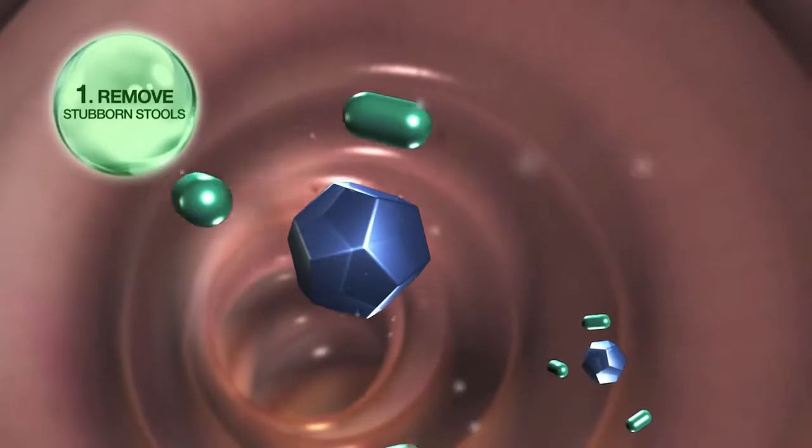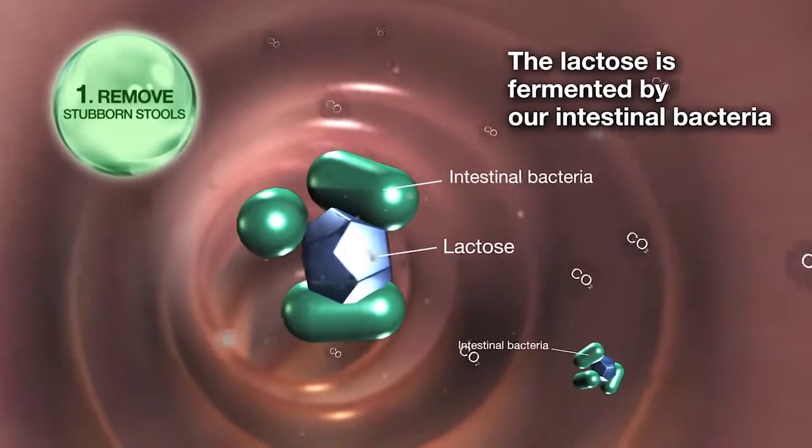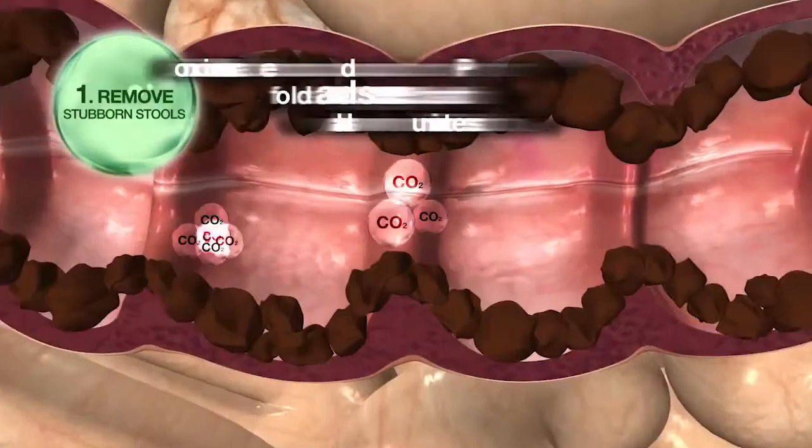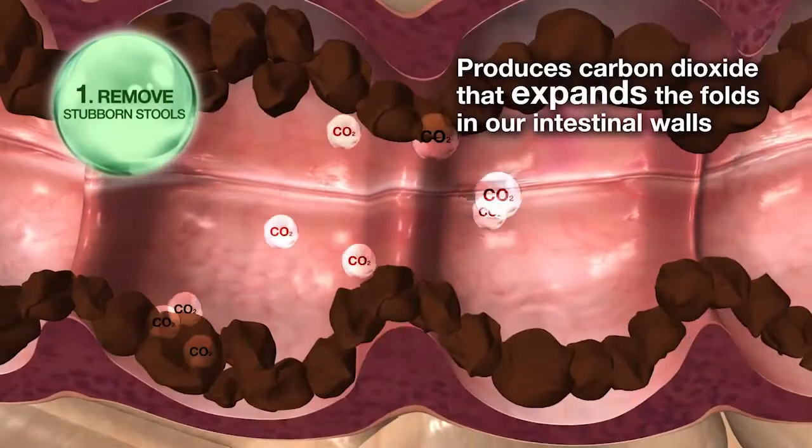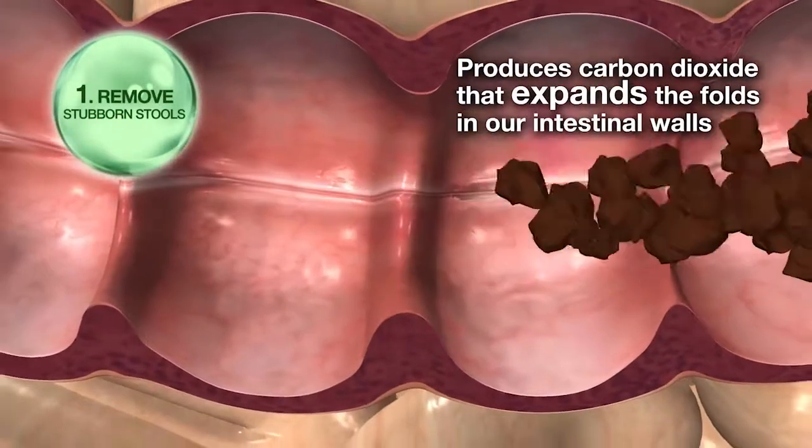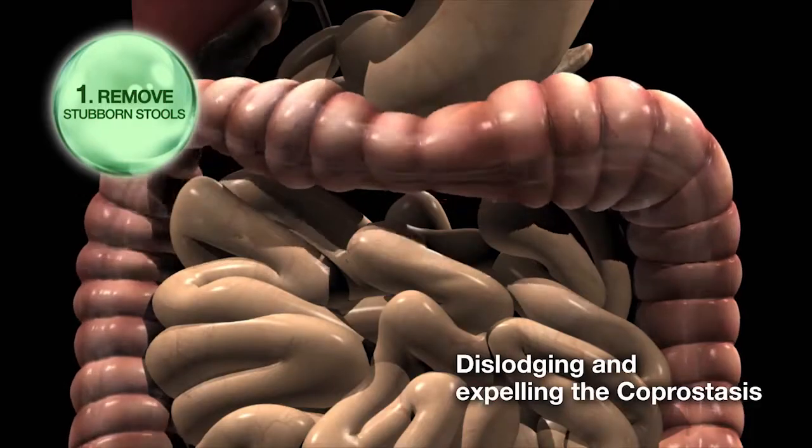Step 1. Remove stubborn stools. The lactose is fermented by our intestinal bacteria. This produces carbon dioxide that expands the folds in our intestinal walls, thus dislodging and expelling the coprostasis.